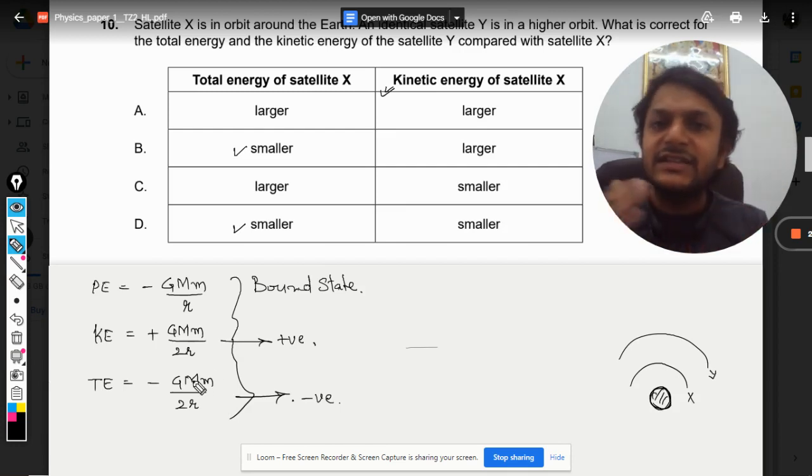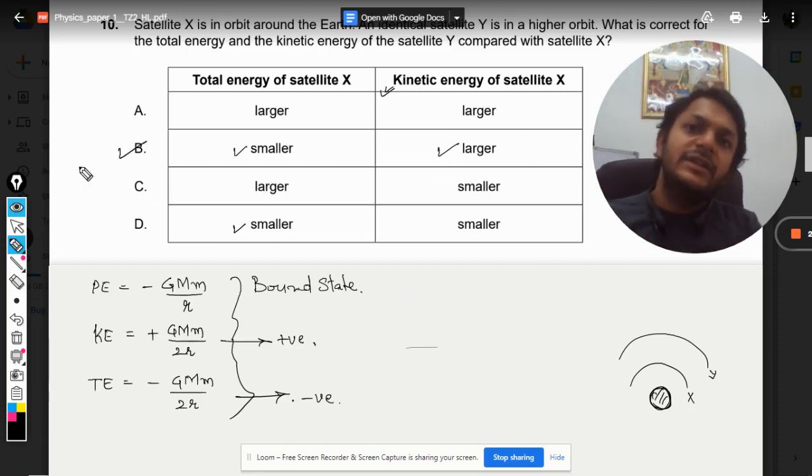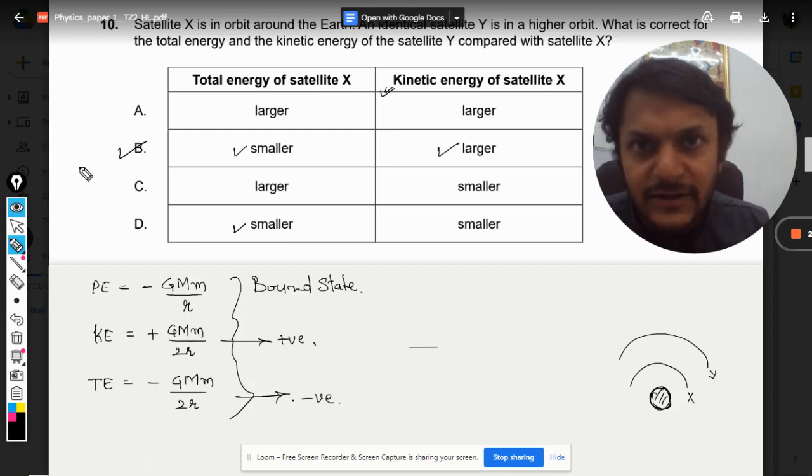Now let us talk about the kinetic energy. Kinetic energy is positive. So more is the distance, lesser is the kinetic energy. So for Y, the kinetic energy is less, and for X, the kinetic energy will be more, so it will be larger. That is why B will be the right answer for us.